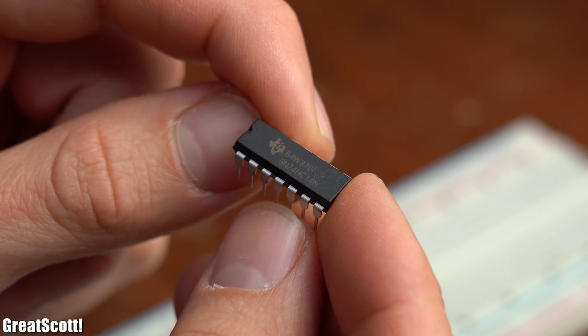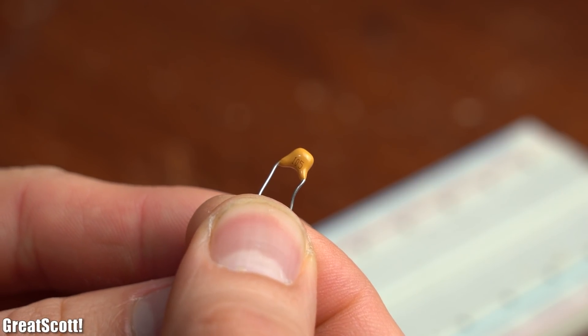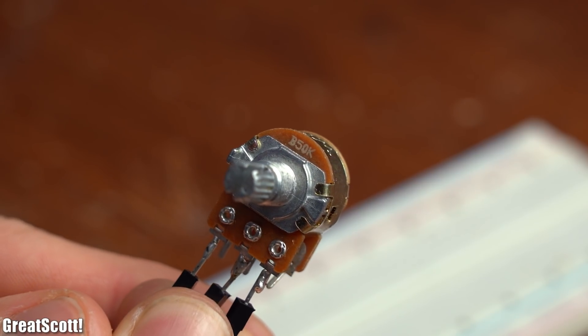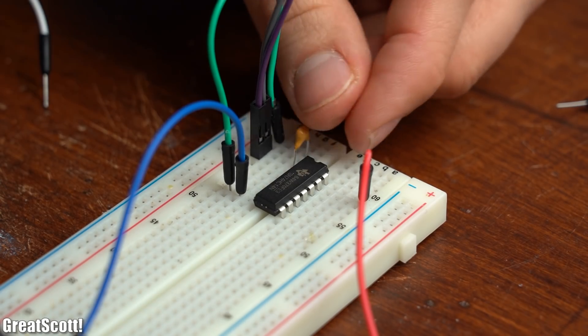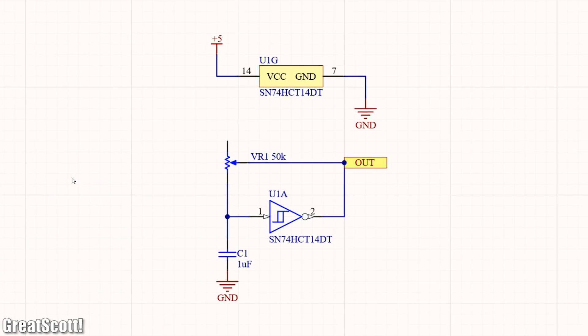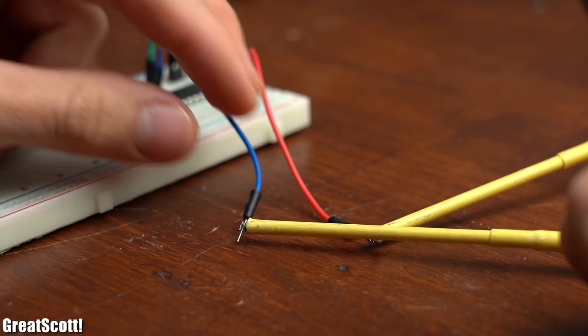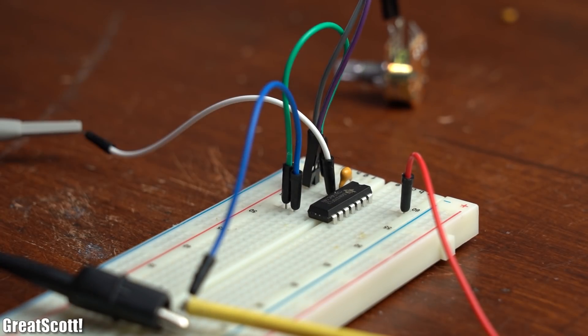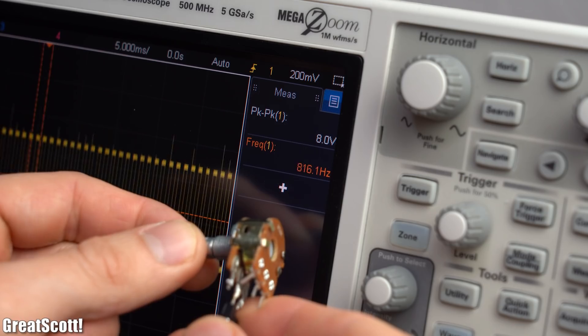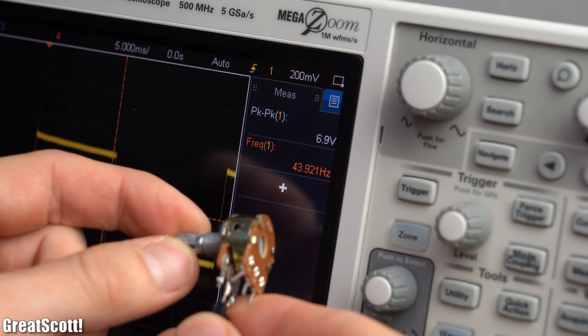All we need is such a Schmitt Trigger hex inverter IC along with one microfarad capacitor and one 50k ohm potentiometer. After connecting the parts to one another on a breadboard according to this minimalistic schematic, we can hook up 5V power and have a look at the output on the oscilloscope. As you can see, it creates a square wave signal whose frequency we can fine-tune with the potentiometer.